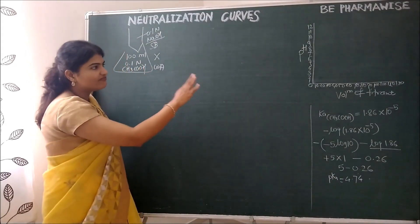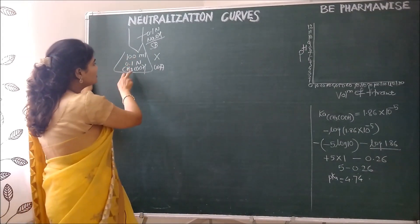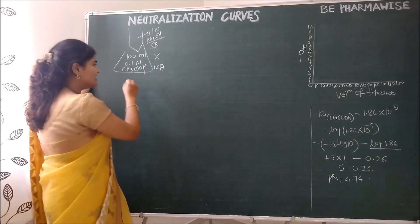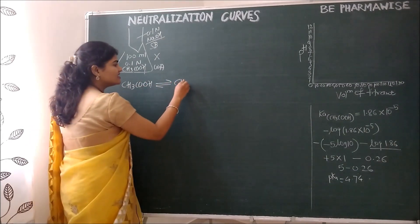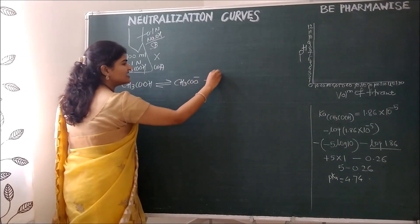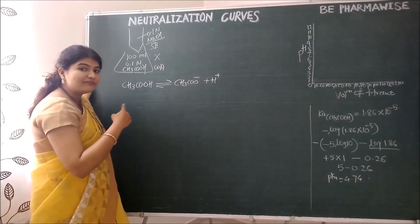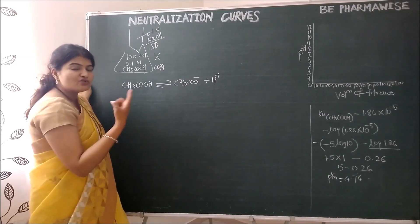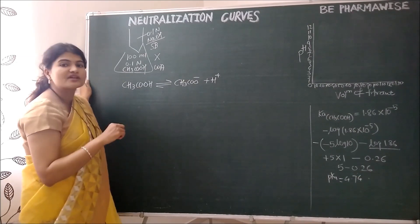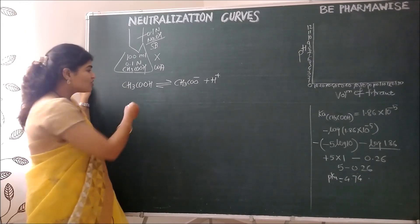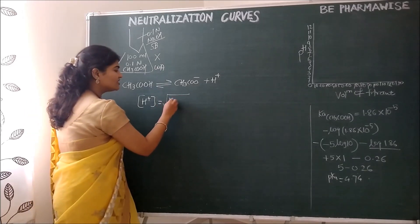We will start with the calculation of pH before the titration begins. In the conical flask there is 100 ml of 0.1 normal acetic acid. Acetic acid is a weak acid, CH₃COOH. It partially dissociates to give CH₃COO⁻ (acetate ions) and H⁺ (protons). Since it is a weak acid, it does not completely dissociate like HCl. So we can't use the formula for strong acids. Here comes the equation: concentration of H⁺ = √(KA × C).